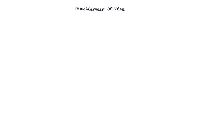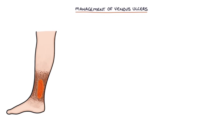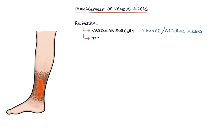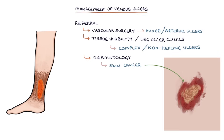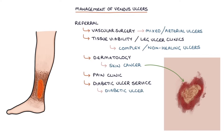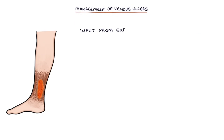The management of venous ulcers is based on the NICE clinical knowledge summaries last updated in January 2021. Patients with venous ulcers may require referral to vascular surgery where mixed or arterial ulcers are suspected; tissue viability or specialist leg ulcer clinics for complex or non-healing ulcers; dermatology where an alternative diagnosis such as skin cancer is suspected; pain clinics if the pain is difficult to manage; and a diabetic ulcer service if the patient has a diabetic ulcer. Patients with venous ulcers also require input from experienced nurses such as district nurses or tissue viability nurses.